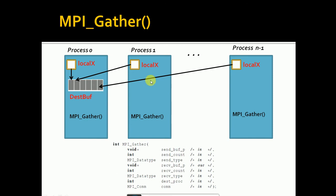The destination of the collection is process zero, so for the destination process parameter we simply use zero — the process with rank zero. And the last parameter is the communicator name; the default communicator is MPI_COMM_WORLD. Now let's jump to the practical demo.